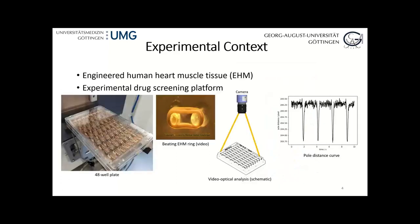We are using engineered human heart muscle tissue (EHM) to establish an experimental drug screening platform. We have human heart muscle tissue from induced stem cells, and we have rings of them. In the video you see two poles in one of these wells — it's heart muscle tissue that actually contracts like a beating heart, though much simpler. We have 84-well plates, so 84 individual tissue samples, and depending on the drugs put in the medium, they hopefully change their behavior. That's what we're doing for drug screening.